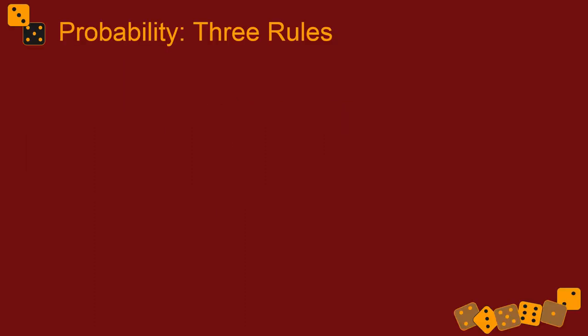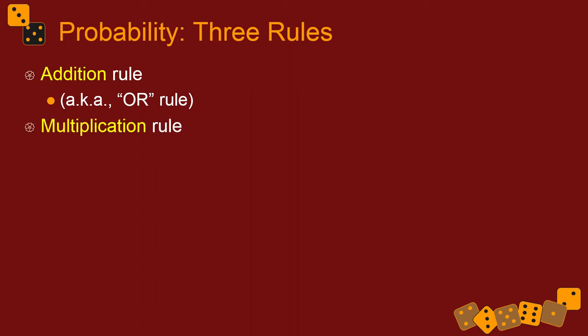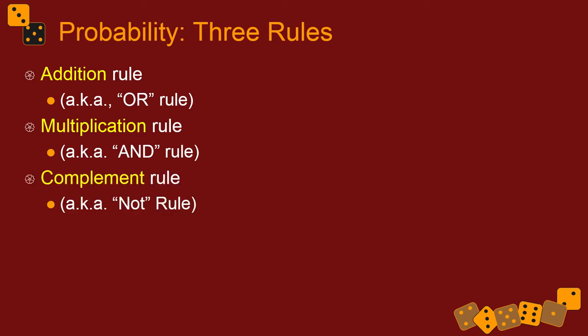We're going to learn three rules: and, or, and not. There's the addition rule that describes how we figure out probabilities of one thing or another thing happening — that's why it's called the or rule. There's the multiplication rule which helps us figure out the probability of two or more things all happening. And the complement rule tells us the probability of a certain event not happening.